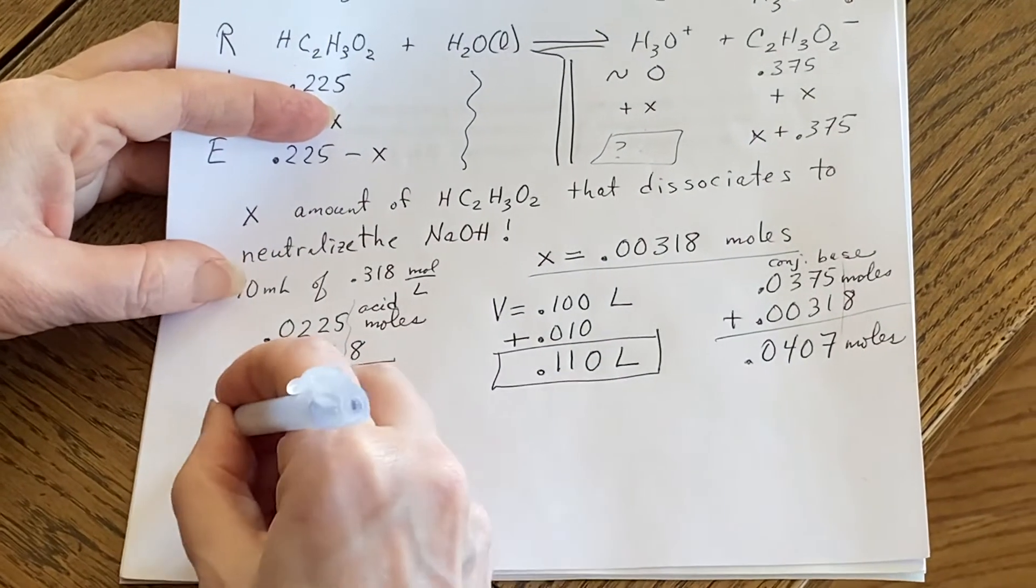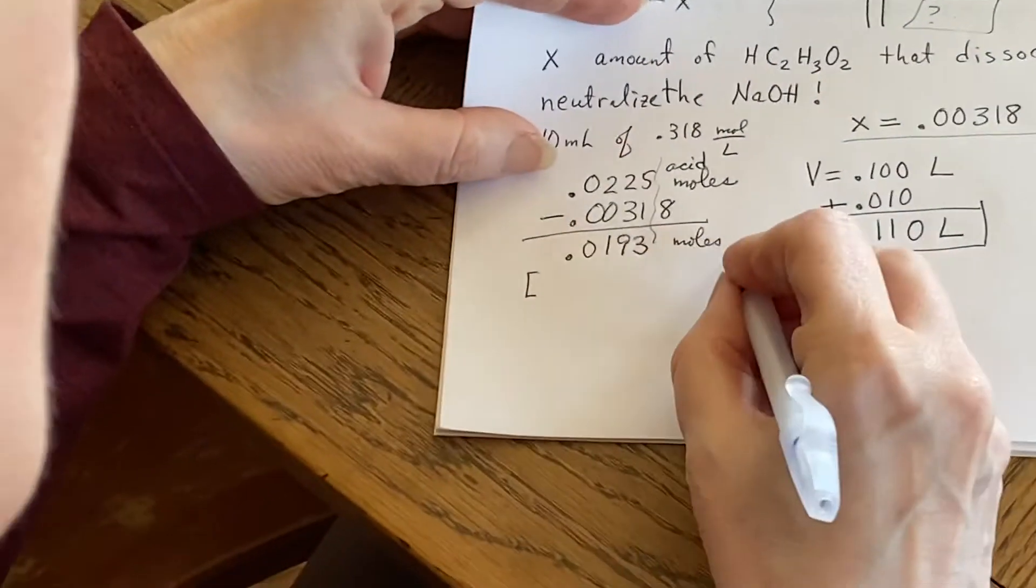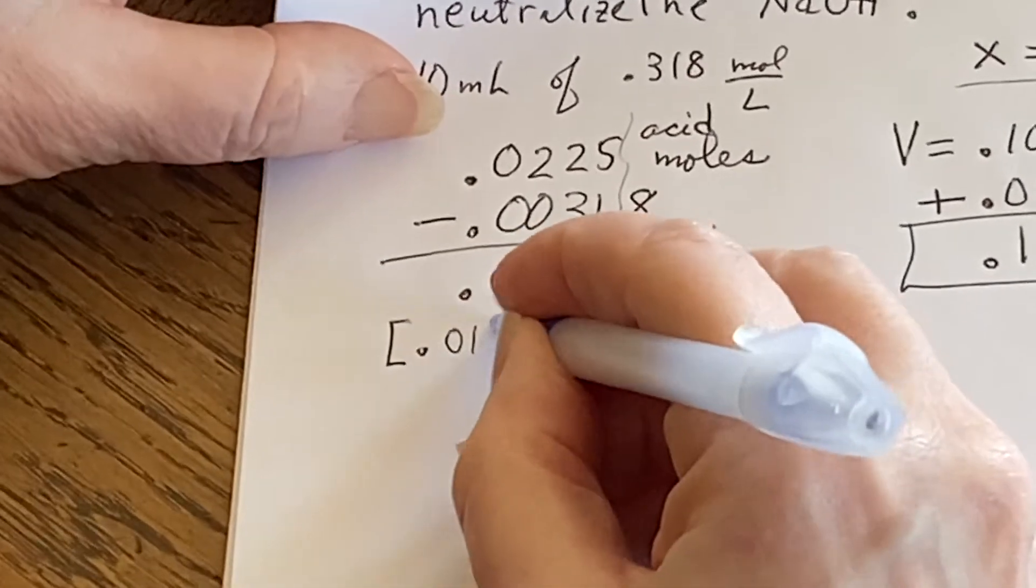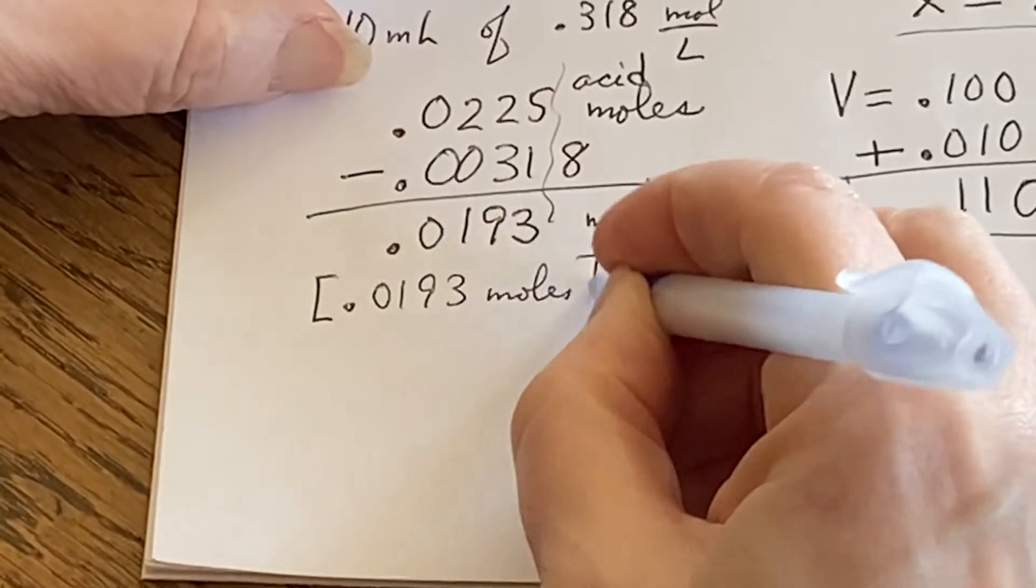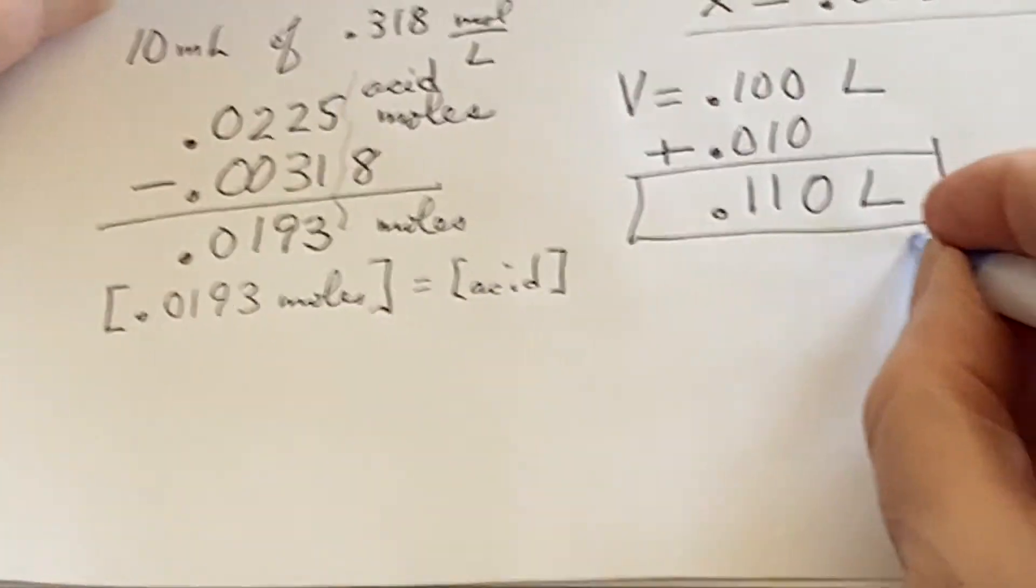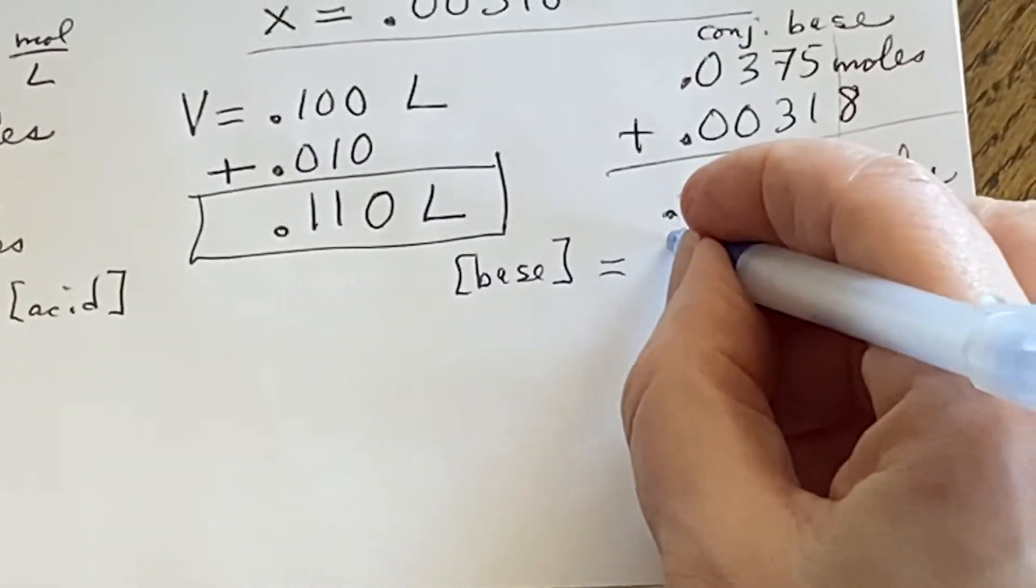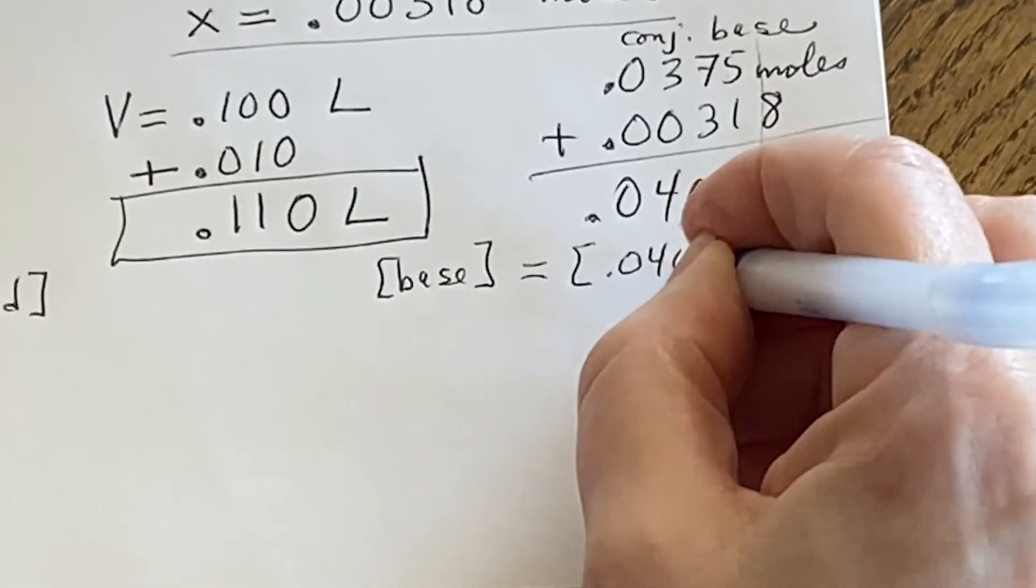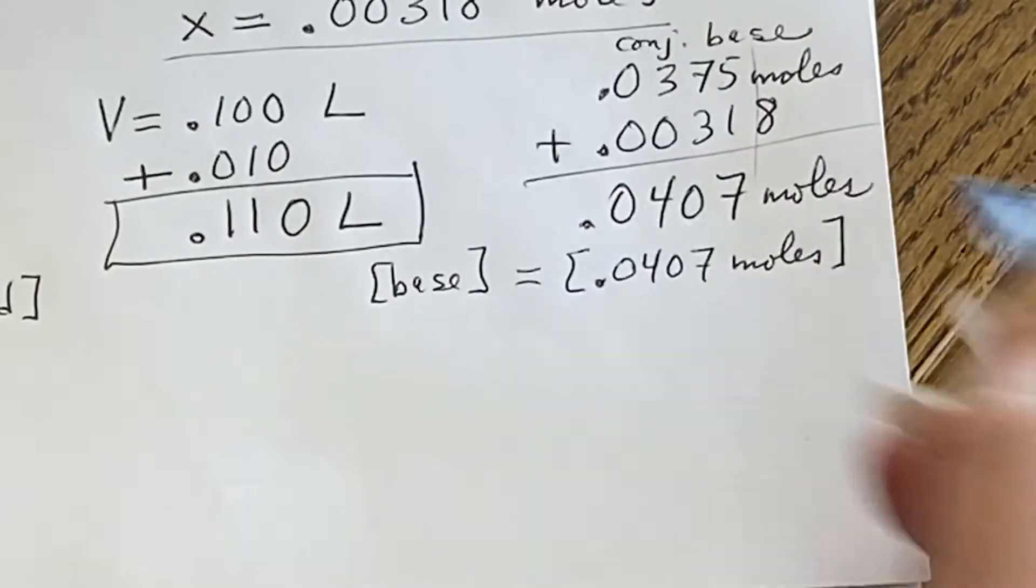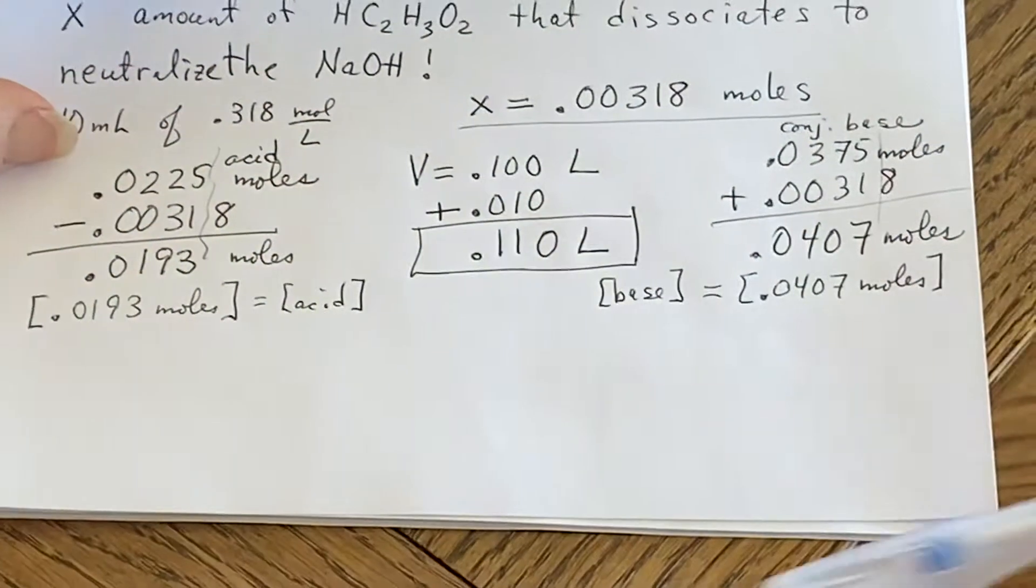So what I've just said is that I'm going to use, even though it isn't strictly accurate, I'm going to use the 0.0193 moles when I talk about acid. And when I talk about base, I'm going to end up using 0.0407 moles, even though it's not really a concentration because they are in the same beaker. So the volume would just cancel out.